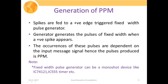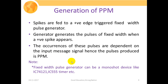The spikes are fed to a positive-edge triggered fixed-width pulse generator, which generates a fixed-width pulse whenever a positive spike appears, otherwise remaining silent. The occurrence of these pulses is dependent on the input message signal, hence the pulses produced are the PPM output. The fixed-width pulse generator can be a monoshot device such as IC74121 or IC555 timer.